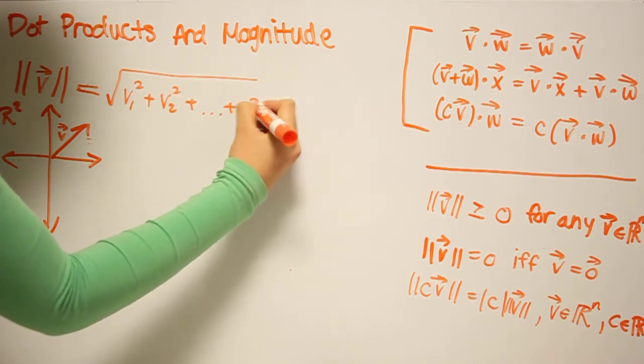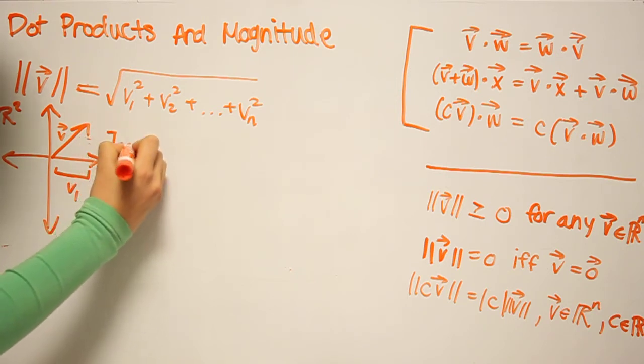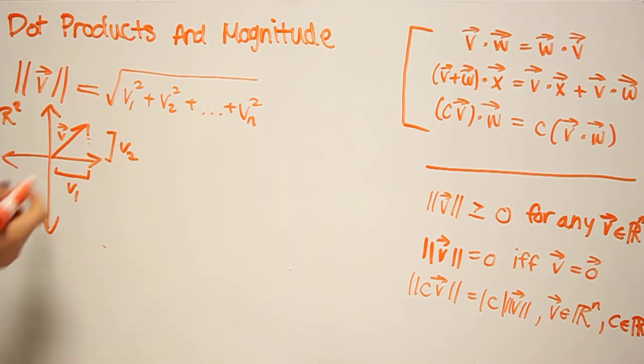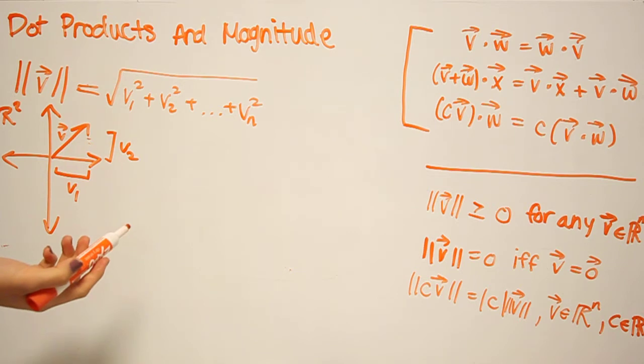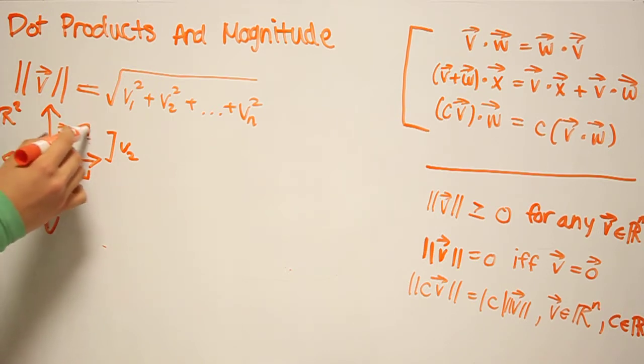And this is easy to see true in R2, so if this is the value for V1, this is the value for V2, well, this is simply the Pythagorean theorem applied to vectors. So we have V1 squared plus V2 squared, take the square root of that, that's equal to the length of this V, which would be the hypotenuse in our geometric example.